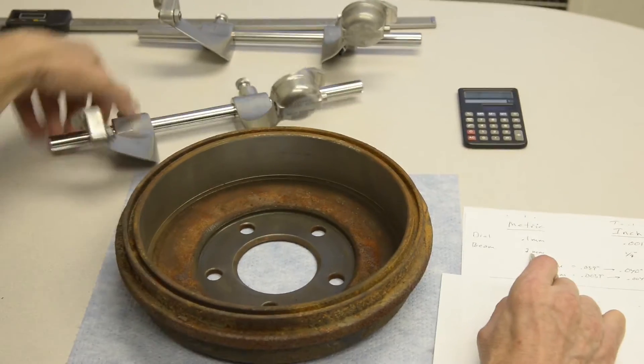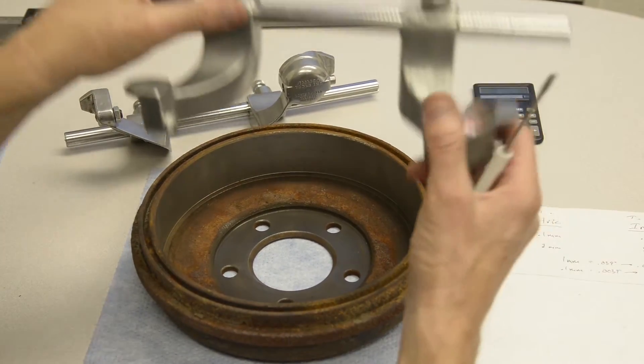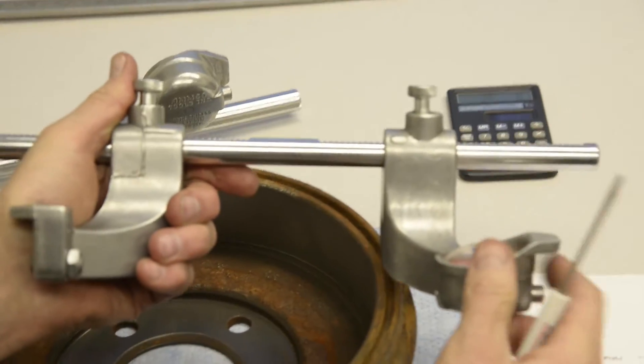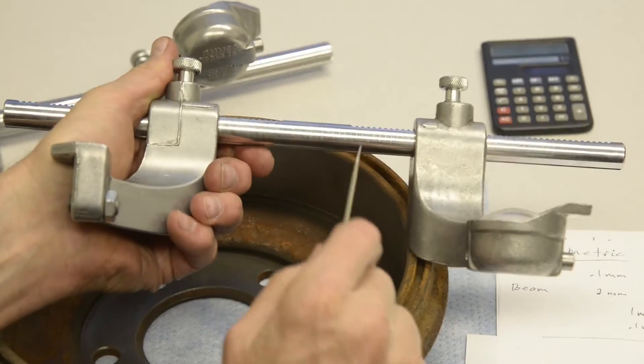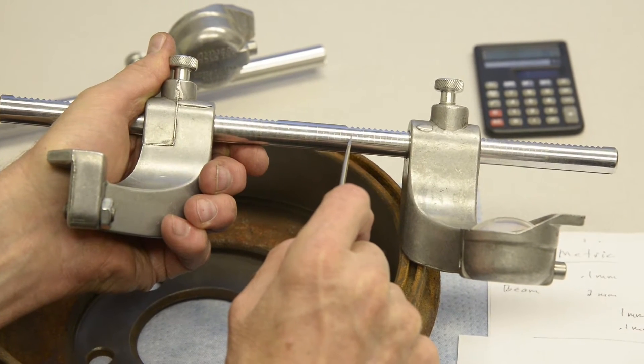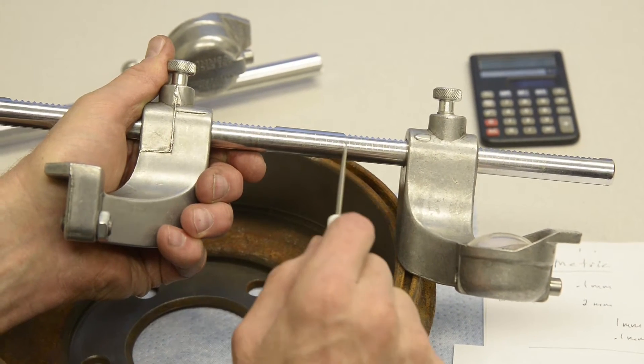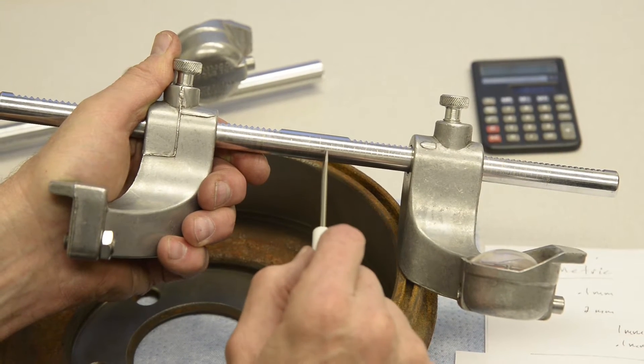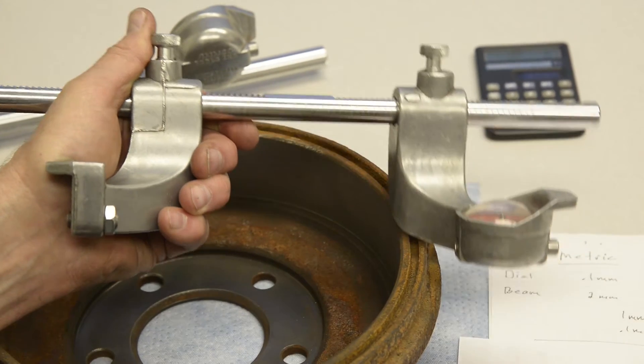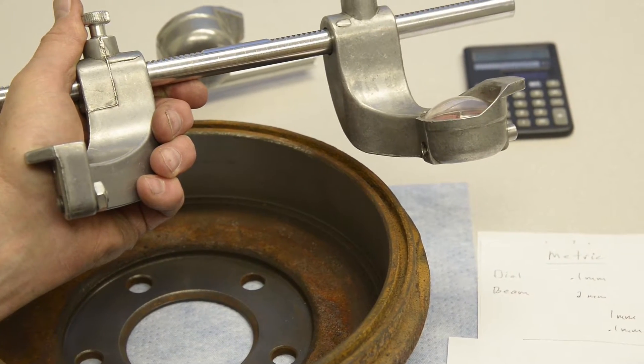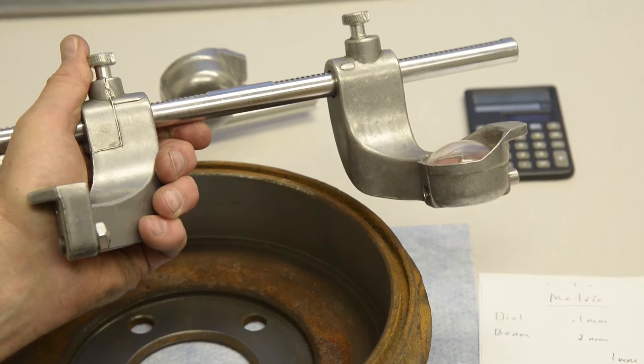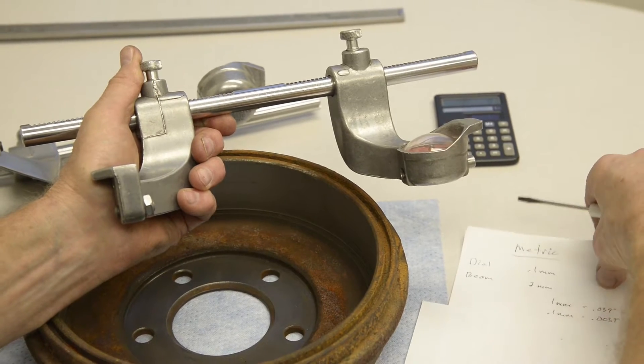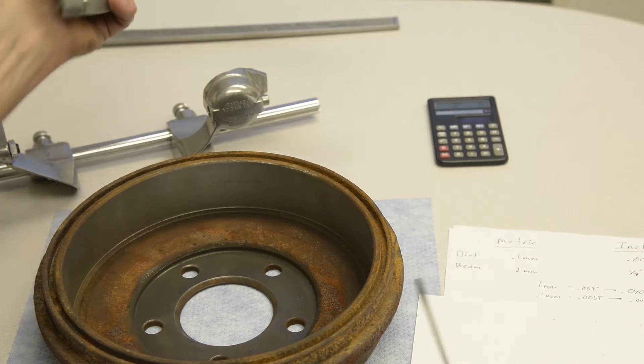Compare that to what we taught in the inch micrometer movie. Each small line on this is in inches, and from this line to this line is one inch, but each line in between is an eighth of an inch - one eighth of an inch is 125 thousandths. We're not going to dwell too much more on the inch micrometer, but we are going to focus on the metric one.